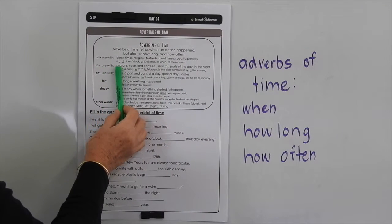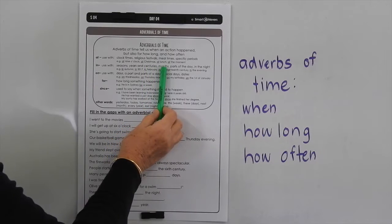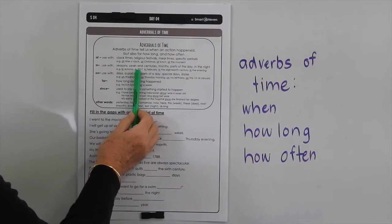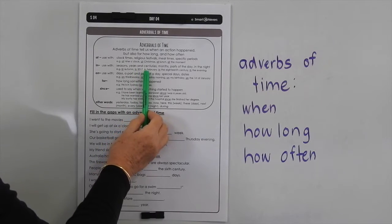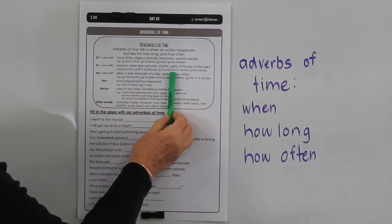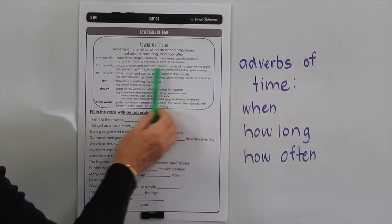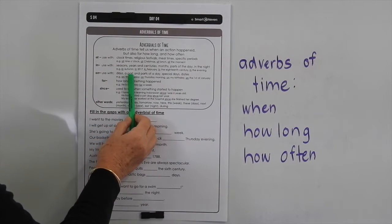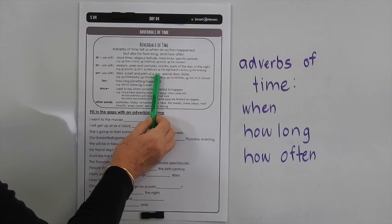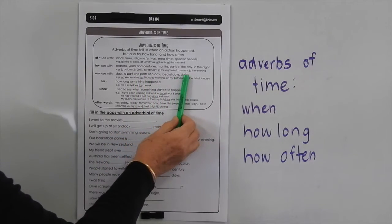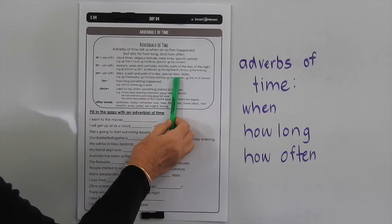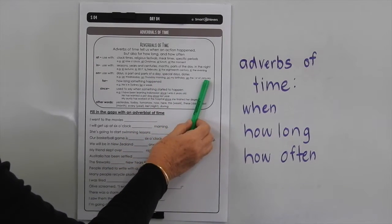We use in for seasons, years and centuries, months, and parts of the day — in the night. So we could have: in autumn, in 2017, in February, in the 18th century, in the evening. We tend to use on with days and parts of the day, for special days, and for dates — so on Wednesday, on Thursday morning, on my birthday, on the 1st of January.